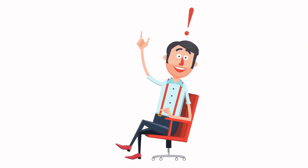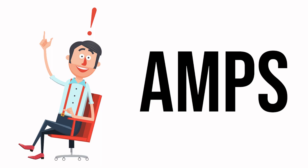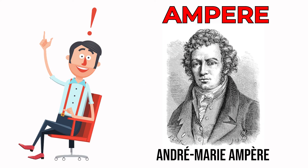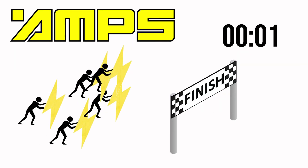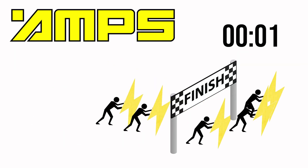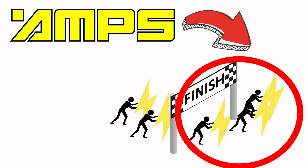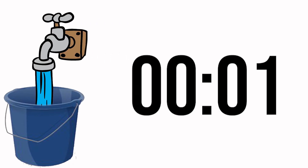Now that we know what a volt or voltage is, let's proceed to amps or ampere, which is used to measure current. It is a unit or term used in counting how many electrical charges the electricity produces in a matter of seconds. To simplify this, it's more like measuring how much water you can collect in a bucket in one second.